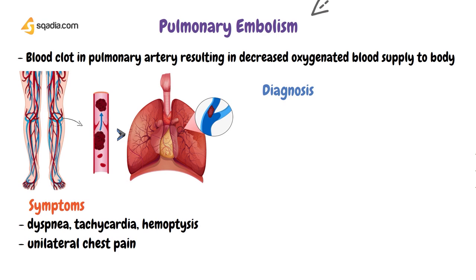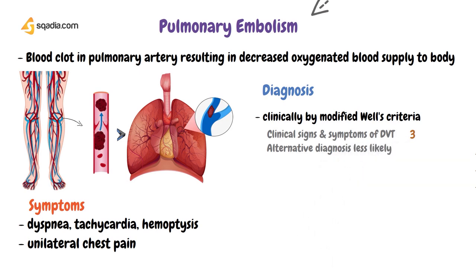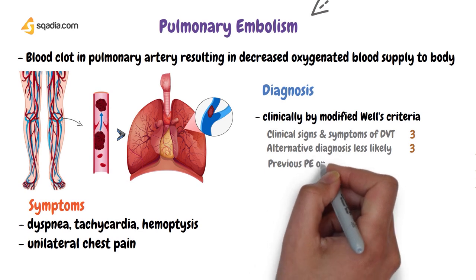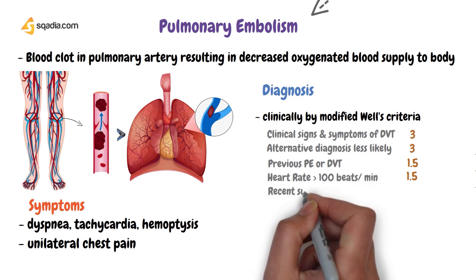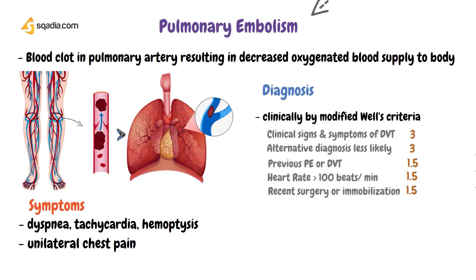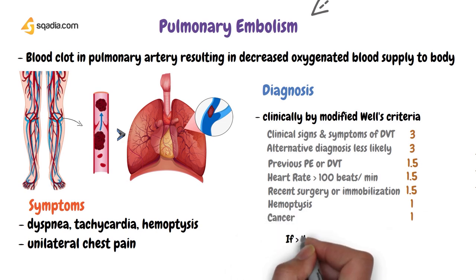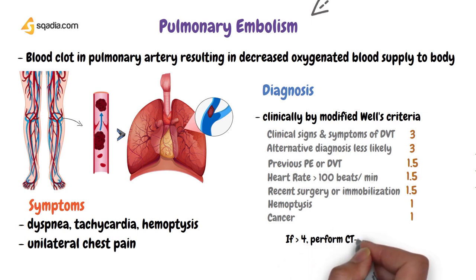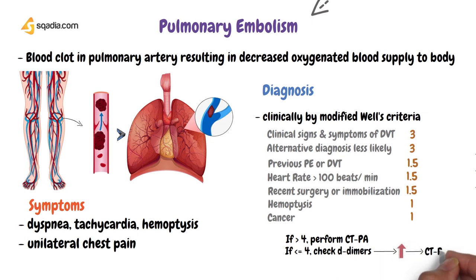To diagnose pulmonary embolism we use the modified Wells criteria. If the patient presents with clinical signs and symptoms of DVT, we add three points. If any other diagnosis is unlikely, another three points. A history of pulmonary embolism or DVT adds 1.5 points; heart rate greater than 100 beats per minute adds 1.5 points; history of recent surgery or immobilization adds 1.5 points; and one point each for hemoptysis and cancer. A score greater than four indicates high suspicion and a CT pulmonary angiogram is done to confirm. A score of four or less indicates low suspicion, so D-dimer levels are first checked, and if elevated, we proceed to CT pulmonary angiogram.